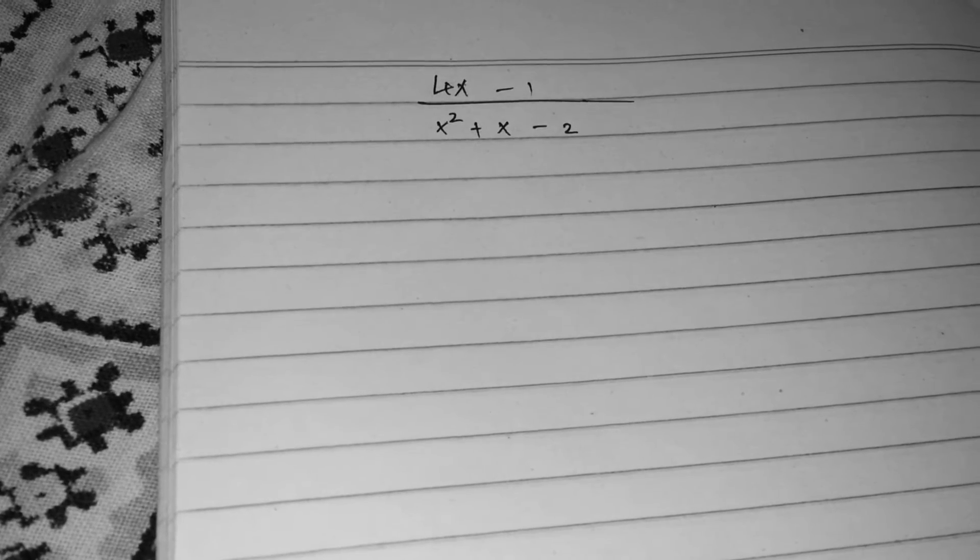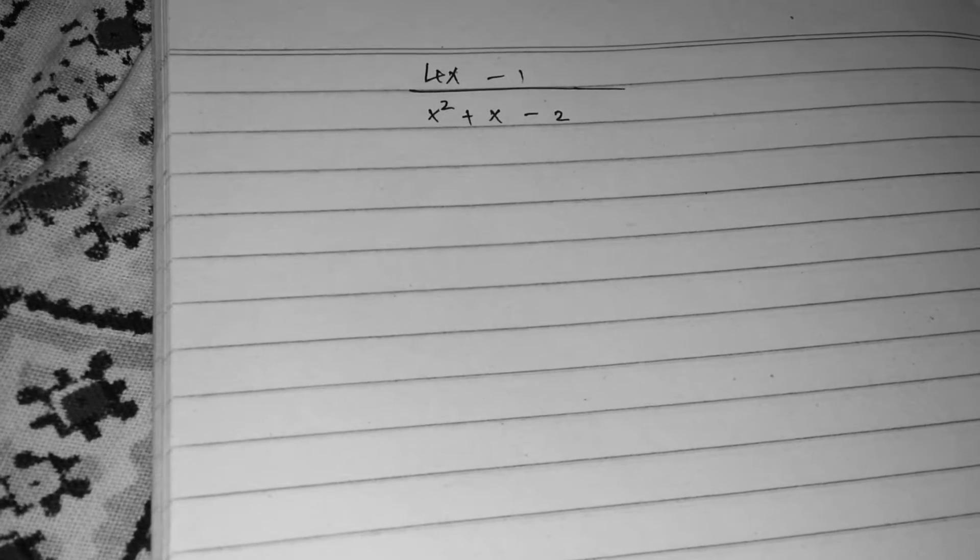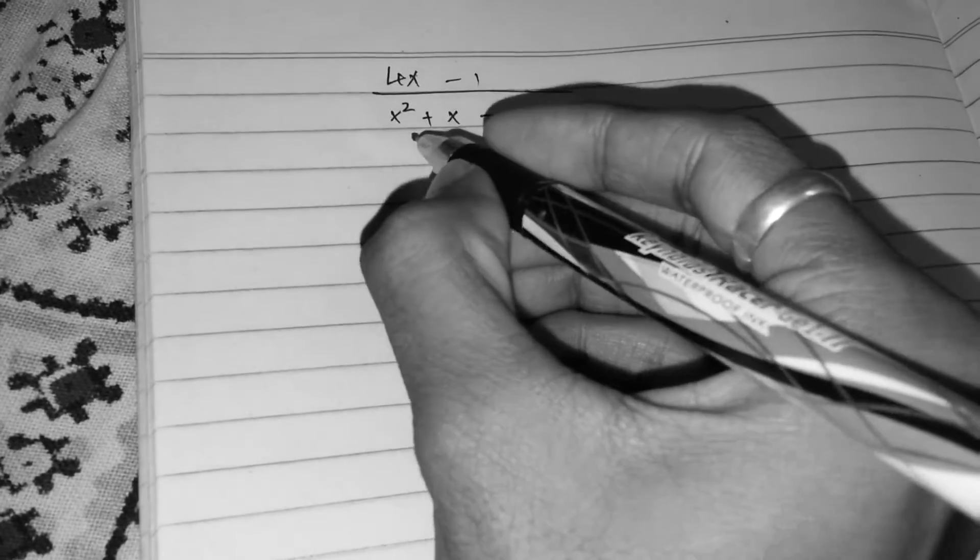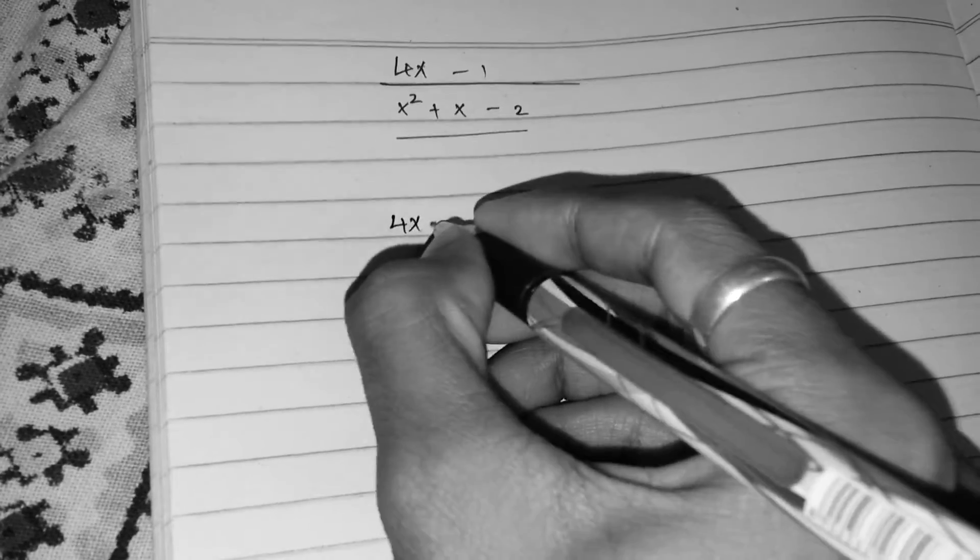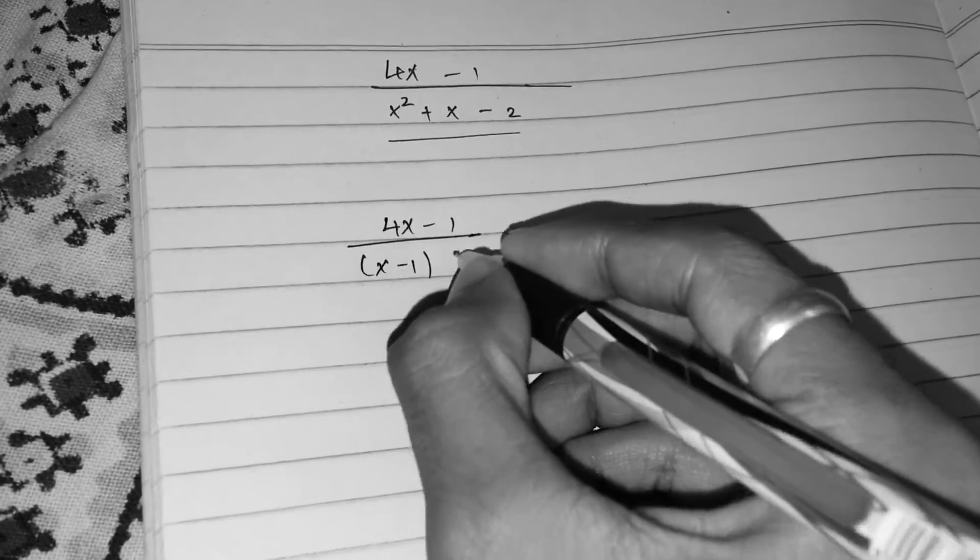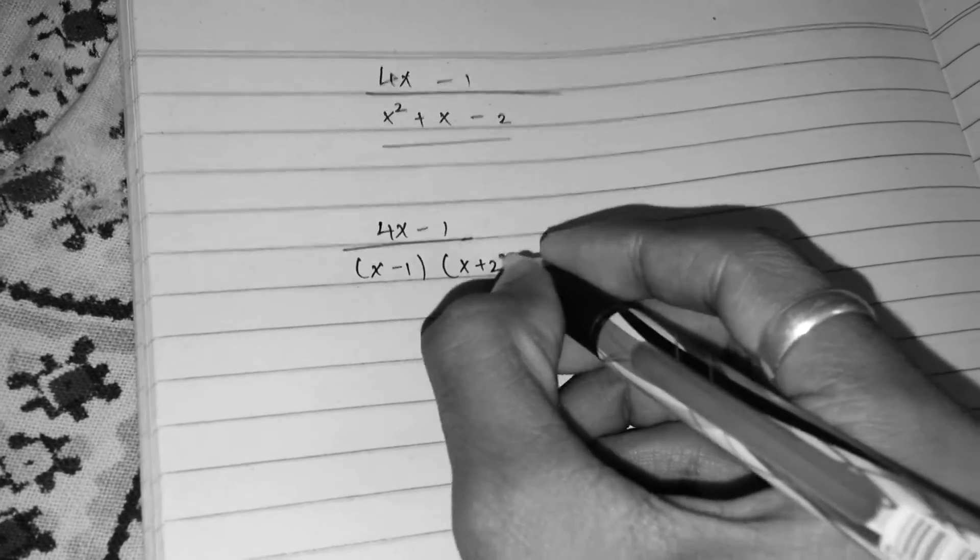Hello guys, in this video I'm going to show you how to do the partial fraction in a very easy method. So all you need to do is factorize this denominator at first. So let's factorize the denominator: 4x minus 1 divided by x minus 1 times x plus 2.